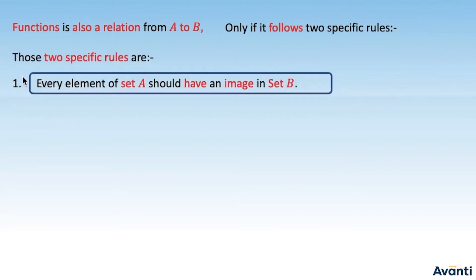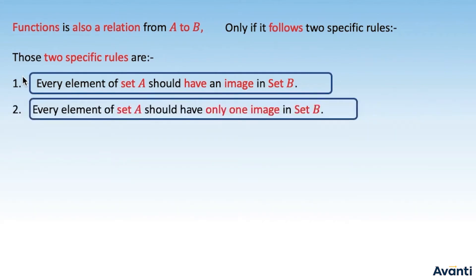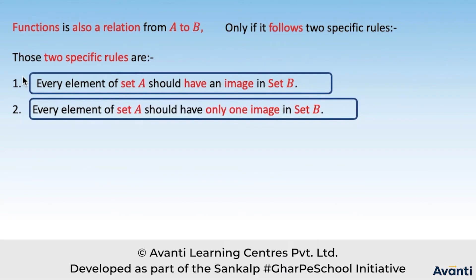Every element of set A should have an image in set B. Set A ke saare elements cover ho ne chahi hai. Second rule, every element of set A should have only one image in set B. Toh ye important rule hai ki sab ki image ho ne chahi hai aur sab ki ek hi image ho ne chahi hai. For example,